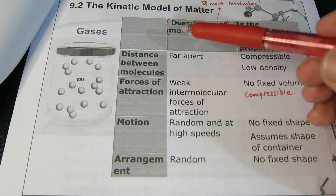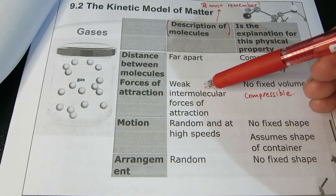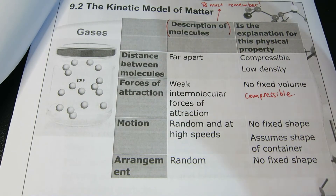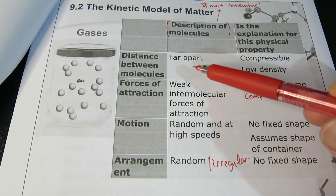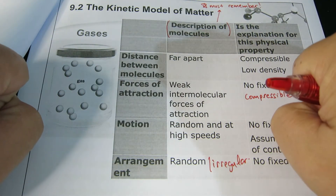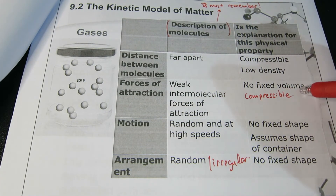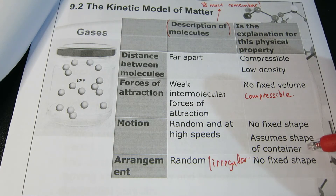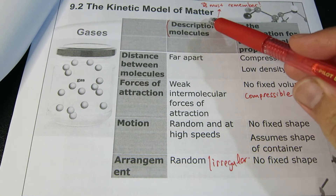For gases, molecules are very, very far apart compared to solids and liquids. The forces of attraction between all the molecules in a gas are very weak — they have weak intermolecular forces of attraction. The motion is random and at high speeds. The arrangement is also random or irregular, with no fixed arrangement. Because molecules are so far apart, gases are very easily compressible and have low density. Because of weak forces there is no fixed volume, and because of random high-speed motion there is no fixed shape.